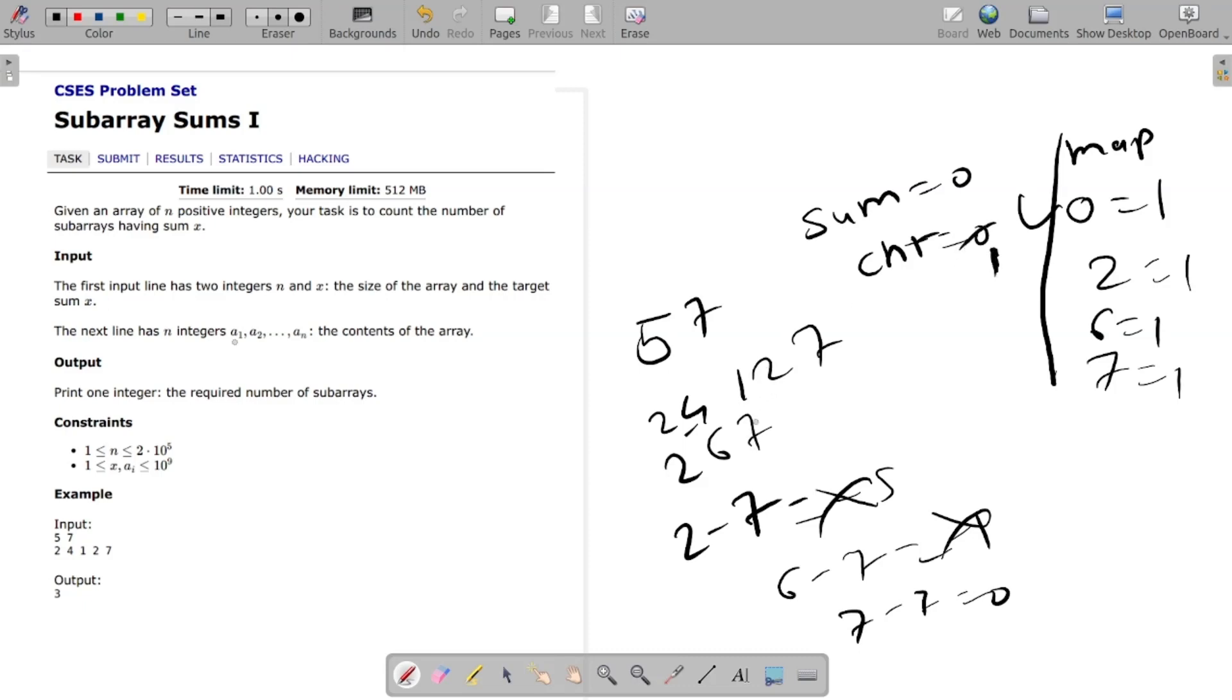Now check 7 plus 2 equals 9. Update in map, check 9 minus 7 present in map, yes. Then we will update our count to 2.